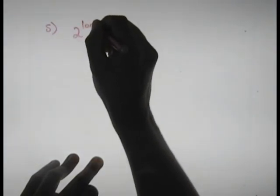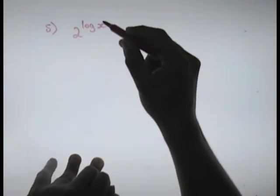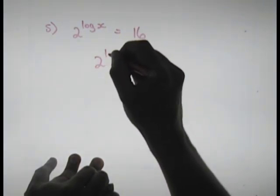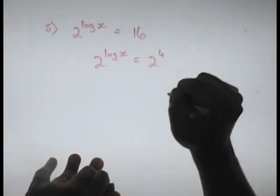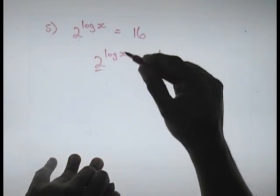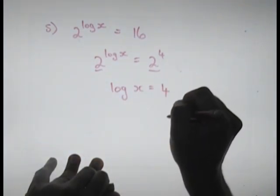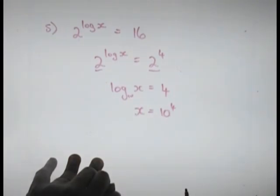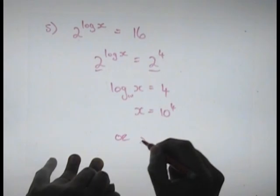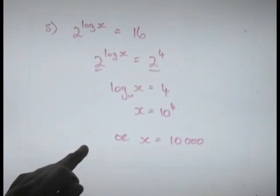The fifth one was: 2 to the power log x equals 16. Since 16 is 2 to the power 4, we have 2 to the power log x equals 2 to the power 4. The bases are the same, so the exponents are equal: log x equals 4. Remember there's a base of 10, so x equals 10 to the power 4, which is 10,000.